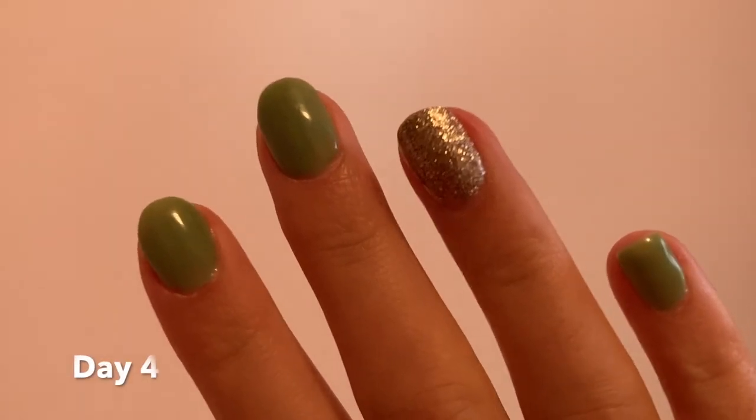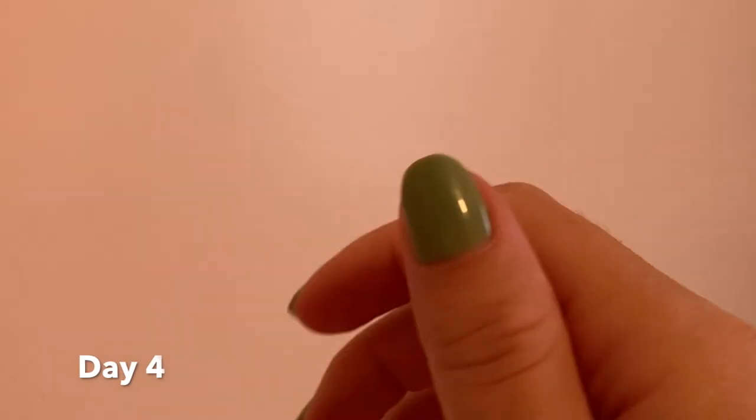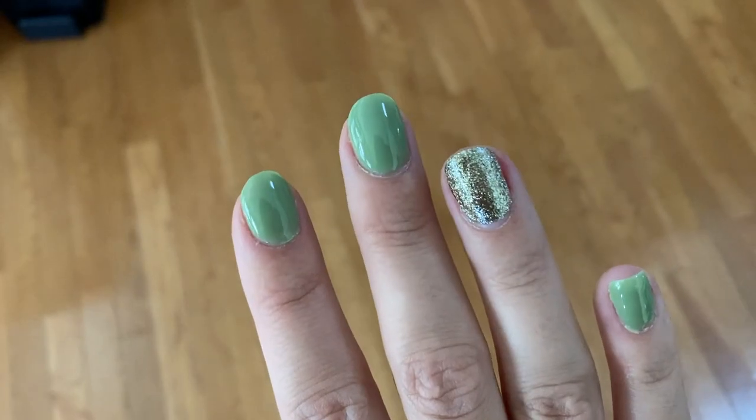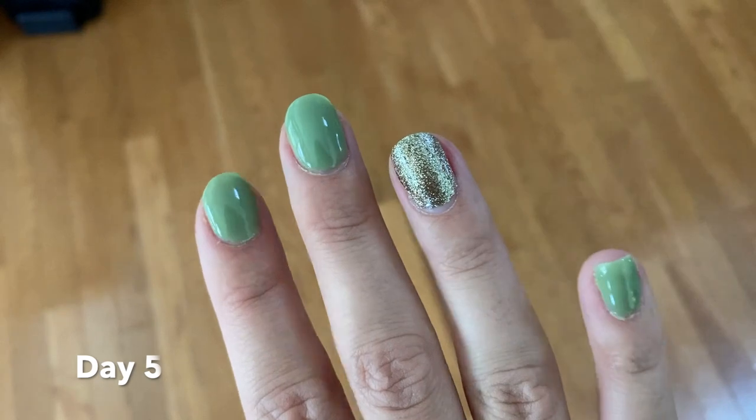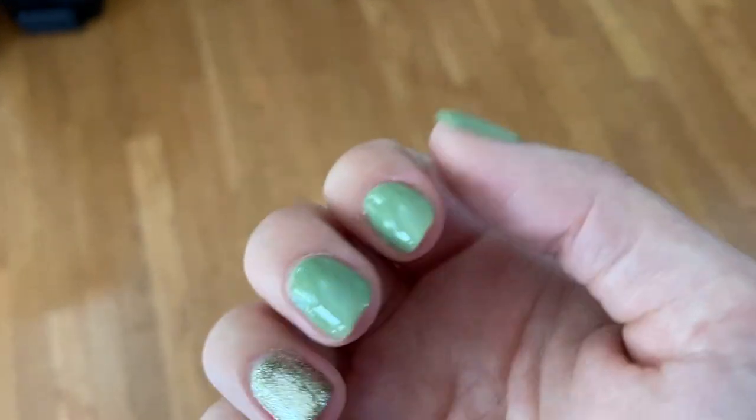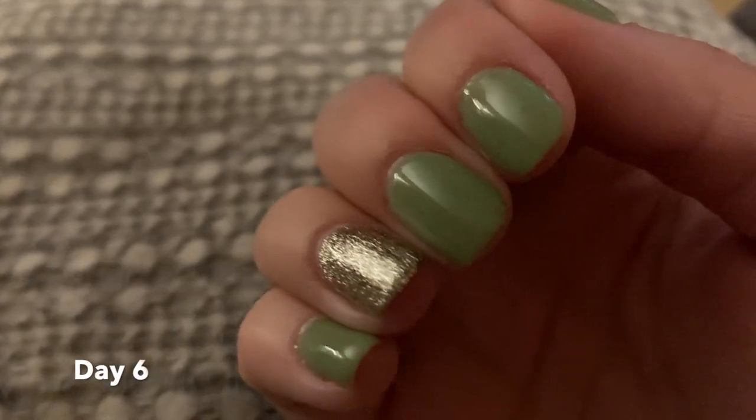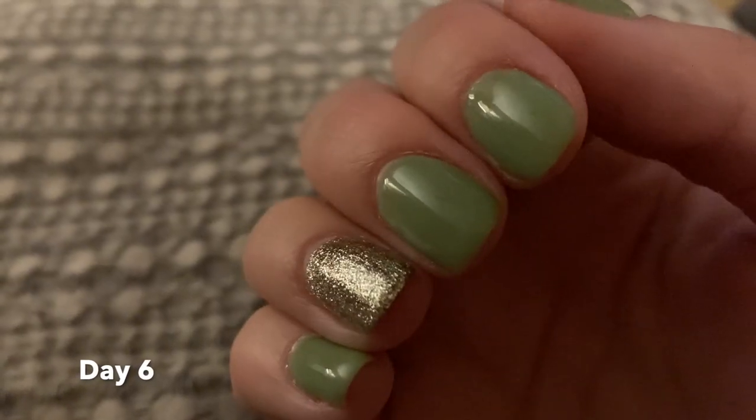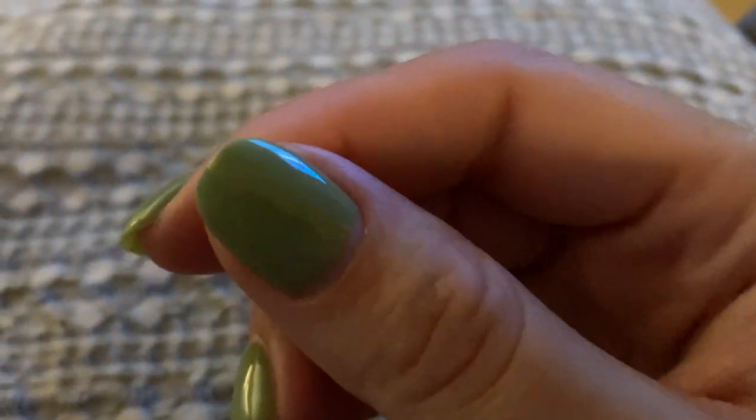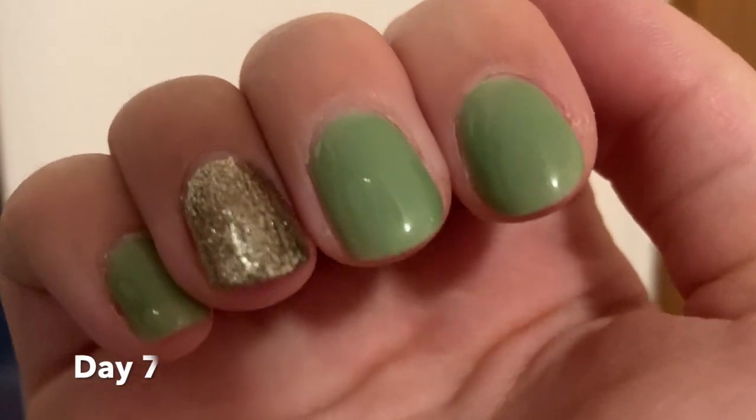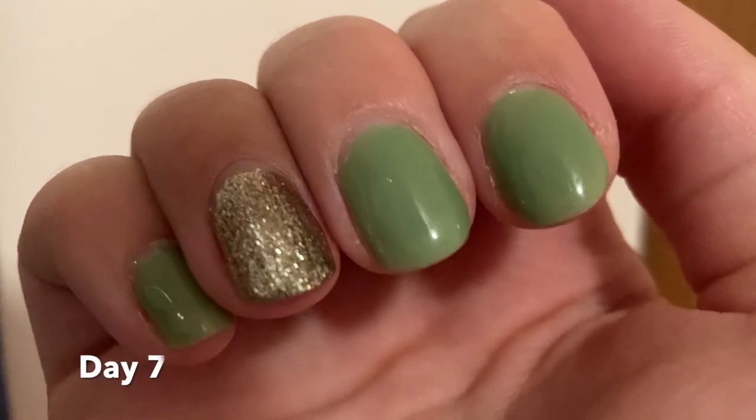Now I just wanted to mention, this might be different for everyone. It varies from person to person. Some people, it might peel off quicker than what I had. And for some people, it might stay on longer than mine. You can kind of start seeing the gel polish grow out a little bit. There's a little bit of gaps in between my cuticle and the gel polish, but still no chipping or peeling.